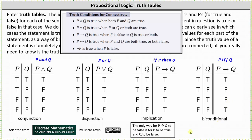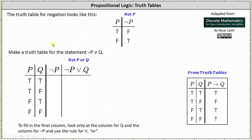It's extremely important that we have a good understanding of these four truth tables. In addition, here's the truth table for the negation of p, or not p. Not p is false when p is true, and not p is true when p is false. Now let's make a truth table for the statement 'not p or q.'